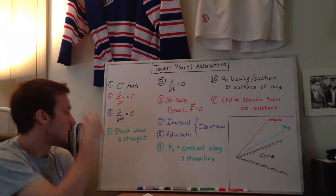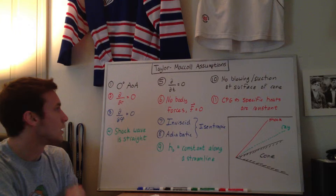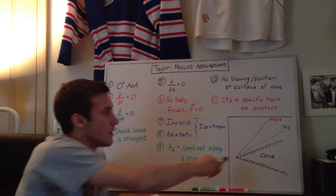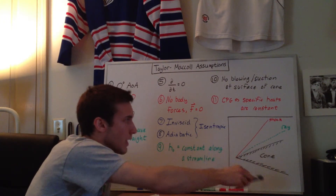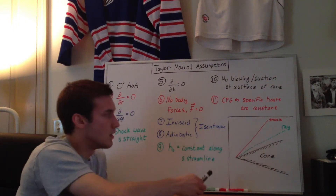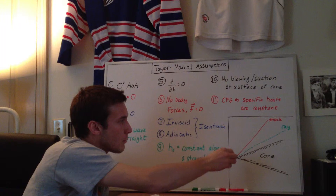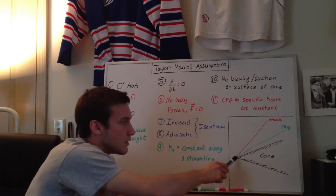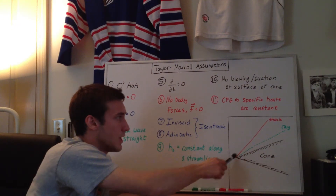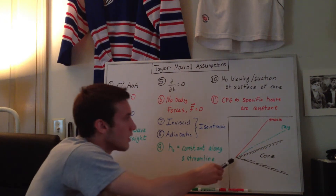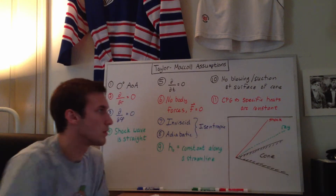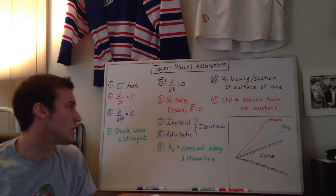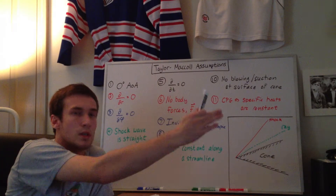The second assumption is that all the properties along the rays are constant — that's what dD/dR equals zero means. A ray, as shown in this picture of the cone: we have the cone in black, the shock in red, and a single ray in green. It's important to note that the rays come from the vertex and go out along the R direction. That means the cone surface is actually a ray, and the shock is also a ray. So as you go out along this green dotted line, which can be anywhere between the shock and the cone surface, the properties are constant along that — meaning the temperature here is the same as the temperature further out.